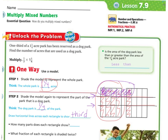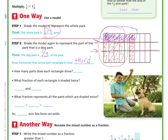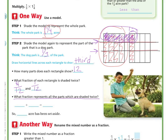How many parts does each rectangle show? Let's count the whole: one through twelve. So each whole has twelve parts now. What fraction of each rectangle is shaded twice? Looking at just the whole, we have four of them shaded twice — that's four-twelfths. And on the other one we have one-twelfth shaded. So four-twelfths plus one-twelfth equals five-twelfths. Five-twelfths of the acre has been set aside as the dog park.